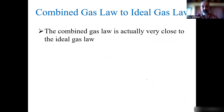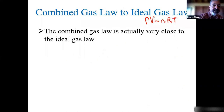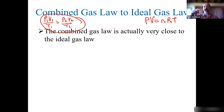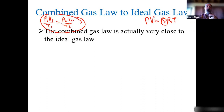We have the combined gas law P1V1/T1 = P2V2/T2, which covers three variables: pressure, volume, and temperature. We need one more parameter — moles — and another law. In the next lecture, we'll use the combined gas law and Avogadro's Law to get to the ideal gas law PV = nRT. Thanks for watching — let me know if you have any questions, and we'll continue this discussion in the next lecture.